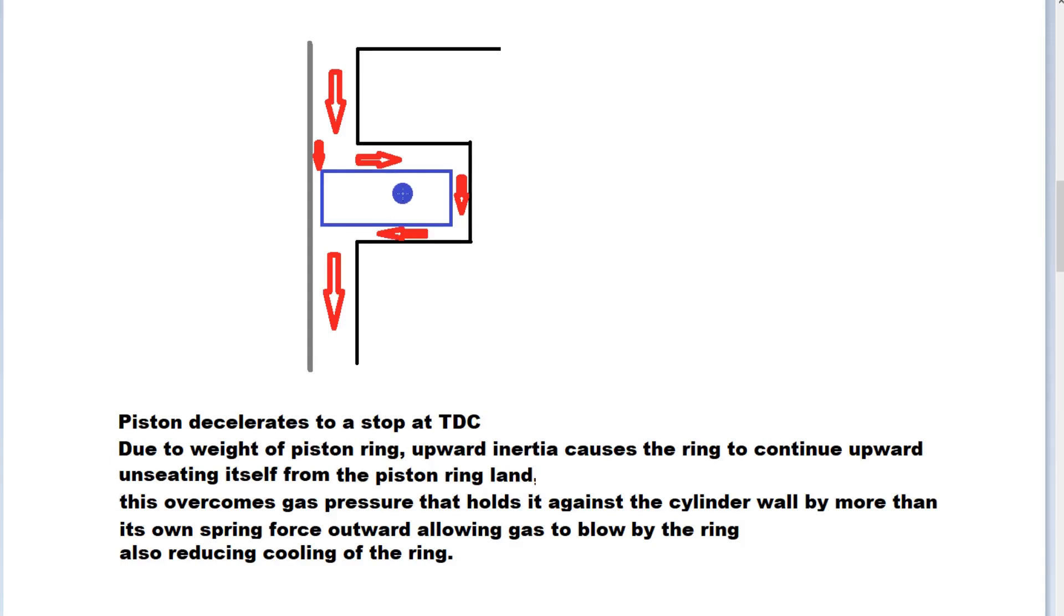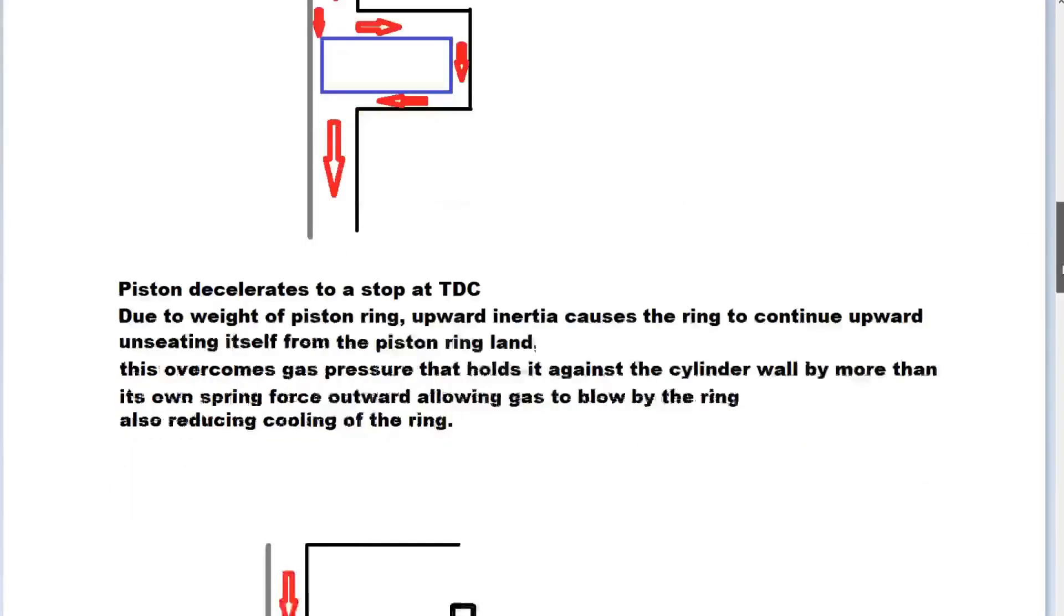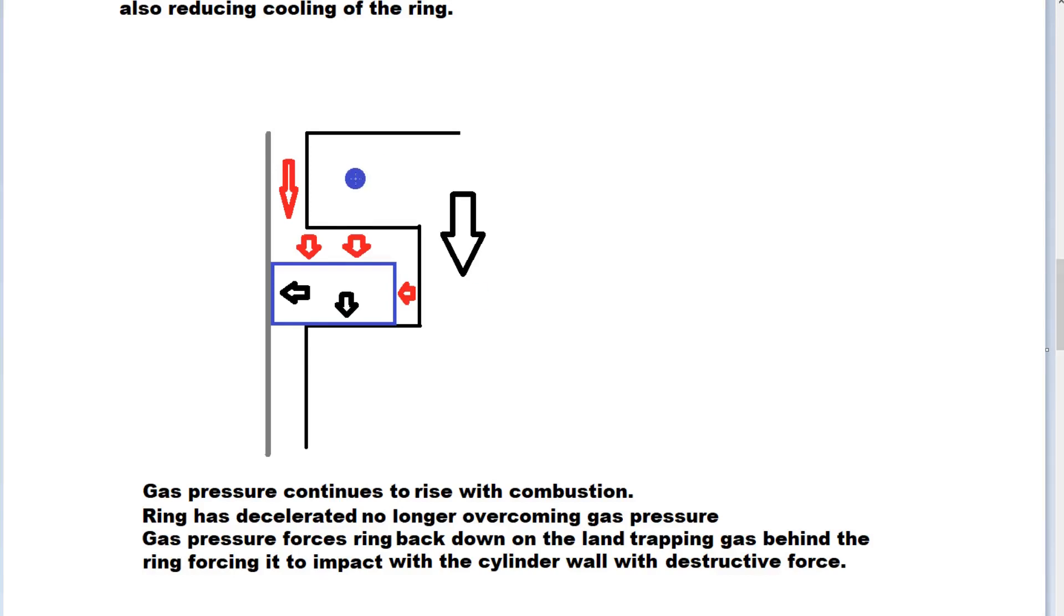As the piston gets to the top, there's a point where the ring itself decelerates to a stop. Then we get the next stage where the gas pressure continues to rise with combustion. Now our piston starts going down. Our piston ring has now gone back down and landed on the land at the bottom of the slot. Gas pressure is sealed from escaping down the bottom, and gas pressure is rising and it forces the ring downwards and outwards. The ring impacts the sidewall and the land.